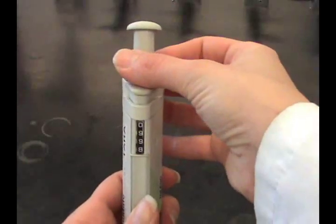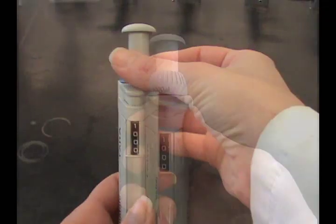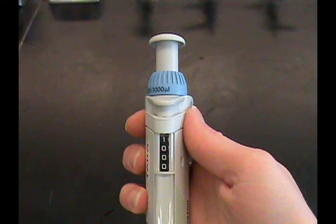To set the volume to transfer, twist the adjustment knob near the top of the pipette. Make sure that the required volume is read on the digital indicator on the side.